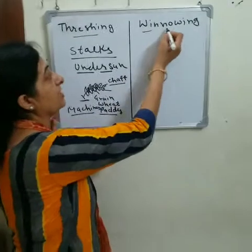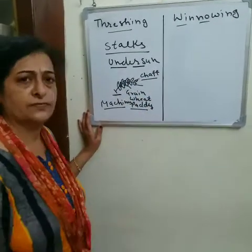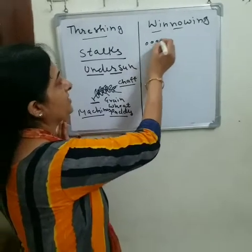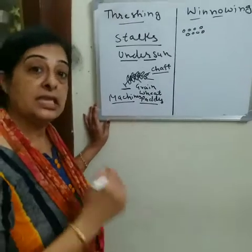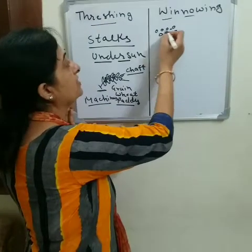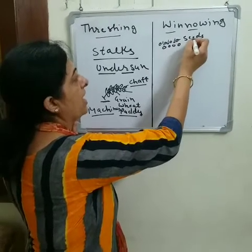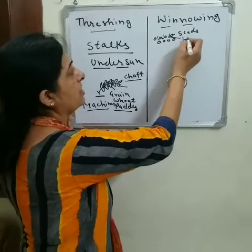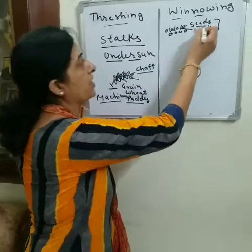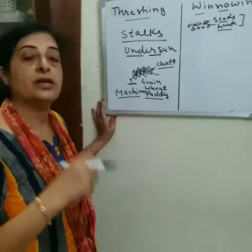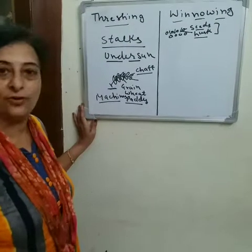Our next process is winnowing. After the process of threshing, we get the grain seeds. However, these grain seeds come with some lighter husk particles mixed in. We need to separate these lighter husk particles from the heavier grain seeds. For this, we use the process of winnowing.